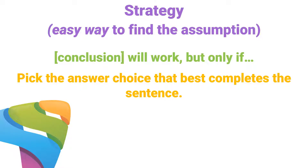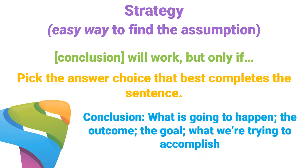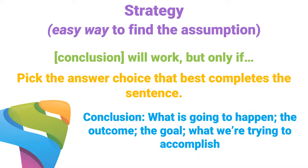In other words, if the answer choice you pick out is true, then the conclusion has a real shot at working. And remember, when you're picking out a conclusion, you're looking for things like what's gonna happen, the outcome, the goal, or what we're trying to accomplish — something like that. We're gonna look at a very simple example and then a very realistic example, and I think you'll get the hang of it.